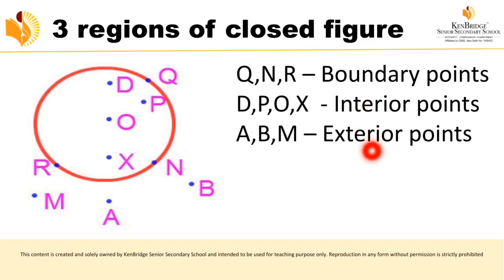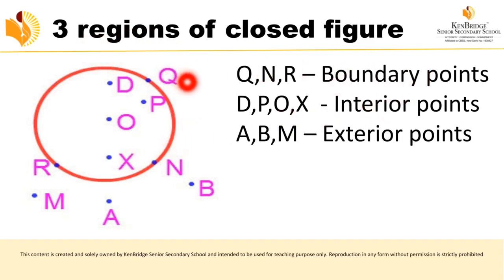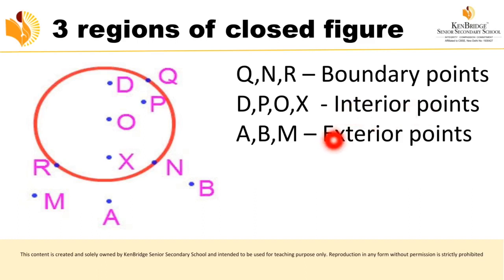In addition to interior and exterior points, we have boundary points. The outline of a closed figure is called the boundary. Whatever points lie on the boundary are called boundary points. In this picture, Q, N, and R lie on the circle boundary and are boundary points. So the three regions of a closed figure are: boundary points, interior points, and exterior points.